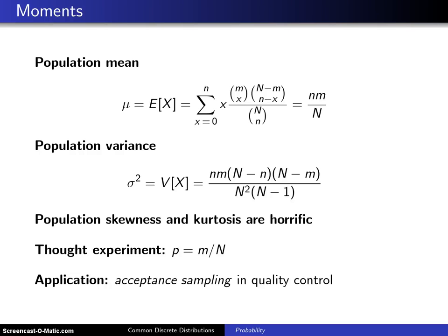This slide concerns the moments of a hypergeometric random variable. The first moment is the population mean, which is mu, or the expected value of X.